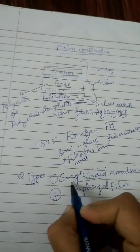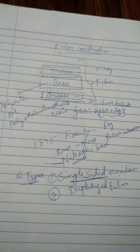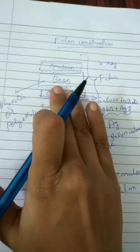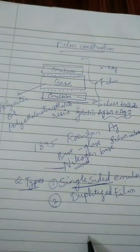Single sided emulsion, the name itself says the emulsion layer is only one side. And the dupletized film, the name itself says there are both side emulsion layer.